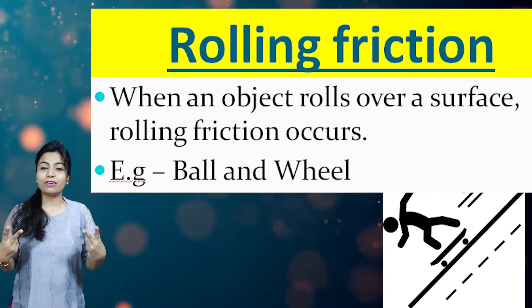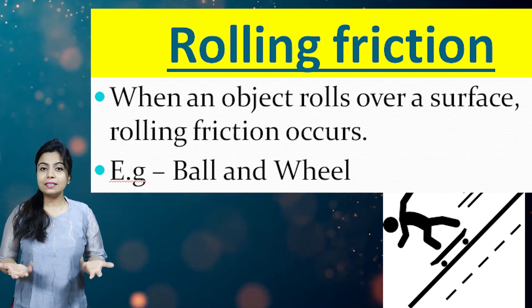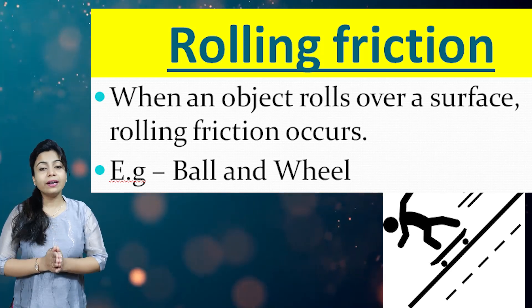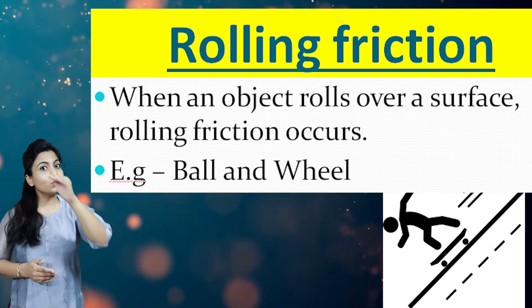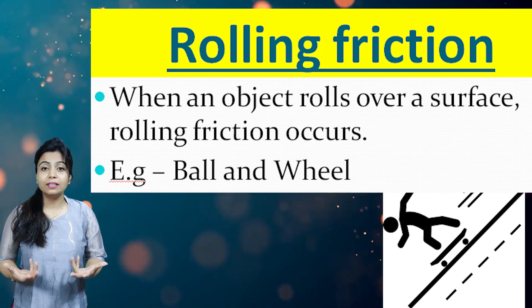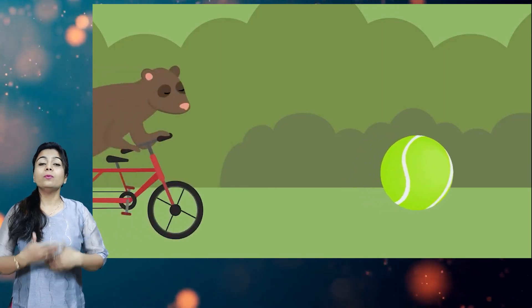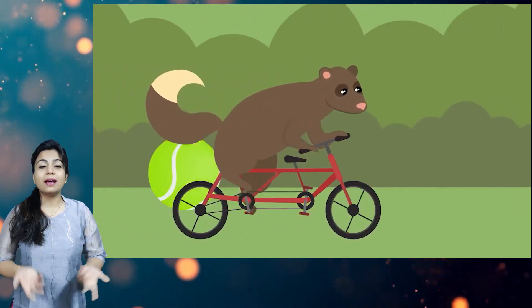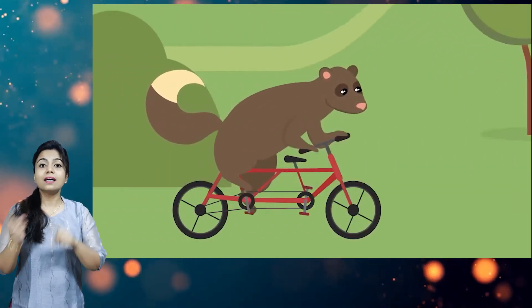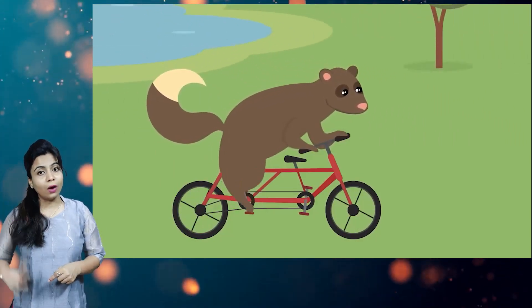Now coming to the second type of friction: rolling friction. Whenever any object rolls over the surface, the friction offered is called rolling friction. For example, a ball rolling on the ground. When you ride a bicycle, the wheels are rolling and they are in contact with the ground, so the ground applies rolling friction.